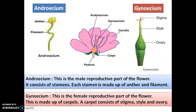In case of hibiscus flower, the androecium and gynoecium are in the same flower. In human beings, males have the male reproductive part and females have the female reproductive part. But in case of hibiscus flower, the same flower has both the androecium as well as gynoecium. There are some flowers in which the androecium and gynoecium are on different or separate flowers, but in case of hibiscus it is on the same flower. Please remember the names androecium and gynoecium.